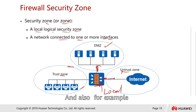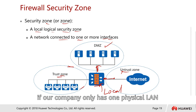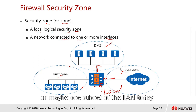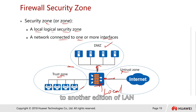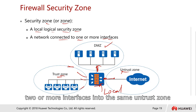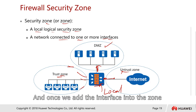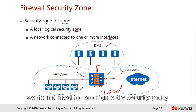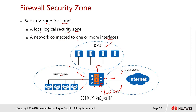A zone is meant to ease configuration when setting security policies. For example, if your company has one physical LAN today and tomorrow wants to expand to another additional LAN with another subnet, you can add two or more interfaces into the same zone. Once the interface is added to the zone, you do not need to reconfigure the security policy again.